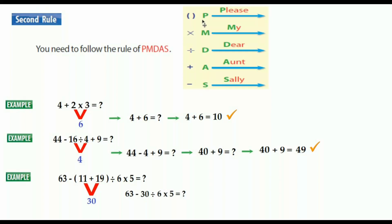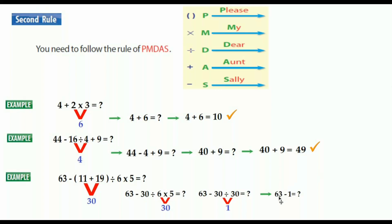No parentheses, but we have multiplication: 6 times 5 equals 30. New question: 63 minus 30 divided by 30. Subtraction and division are different, not similar — follow PEMDAS again. No parentheses, no multiplication, but we have division: 30 divided by 30 equals 1. New question: 63 minus 1.